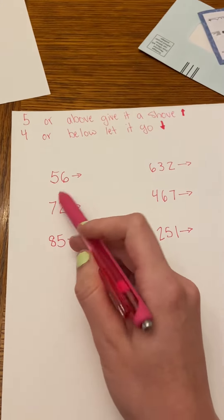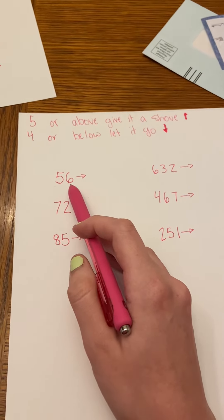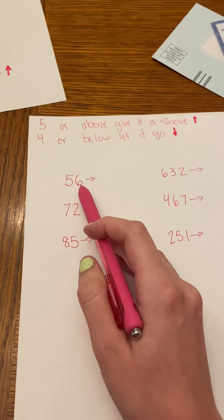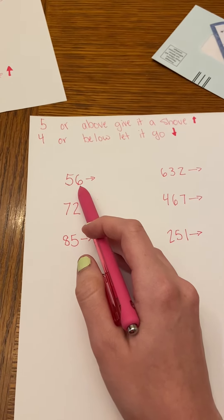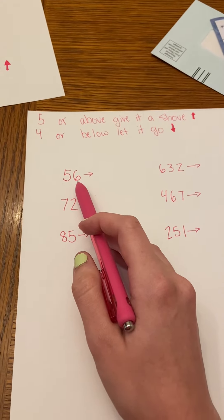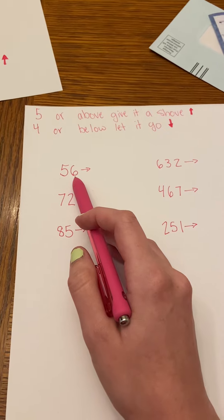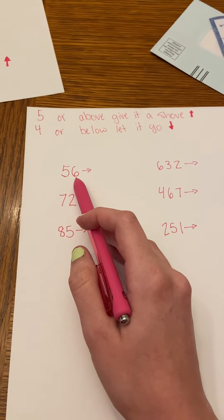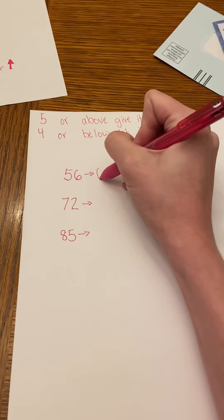So if it's 56 and I'm looking at my ones place rounding to the nearest ten, the six is five or above. It's one above five. So I know I'm going to need to round up to the next ten, which is 60.